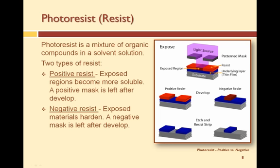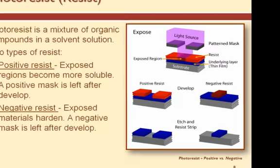Photoresist is a mixture of organic compounds held together in a solvent solution. There are two basic types of photoresist: negative resist and positive resist. The primary difference is how they respond to the light source.